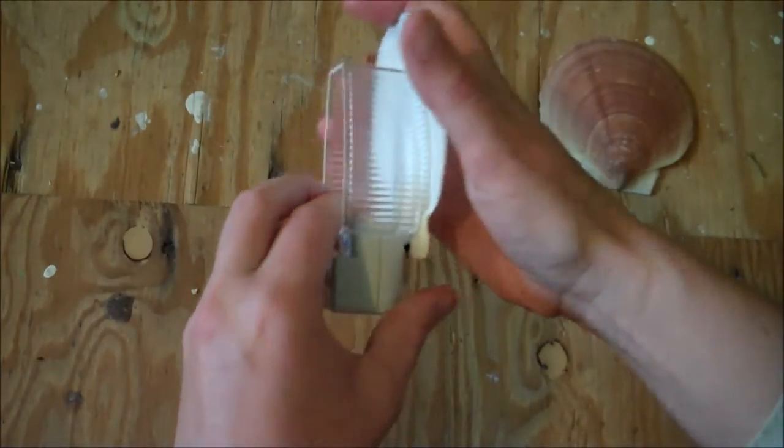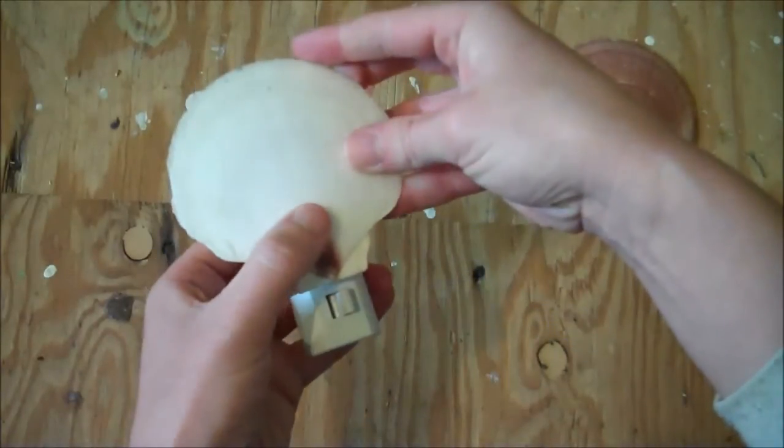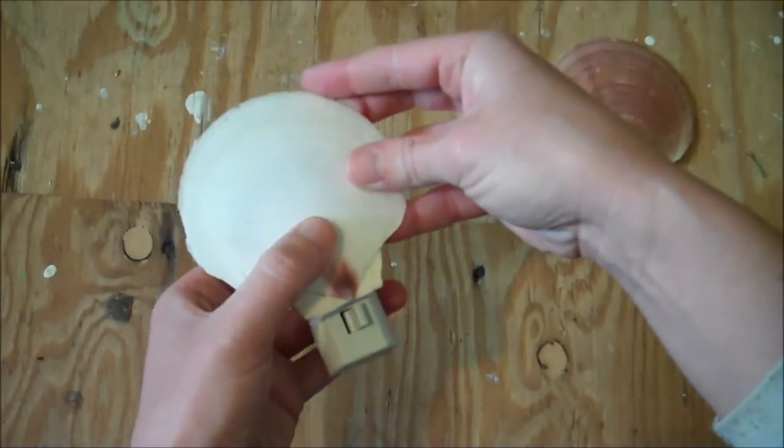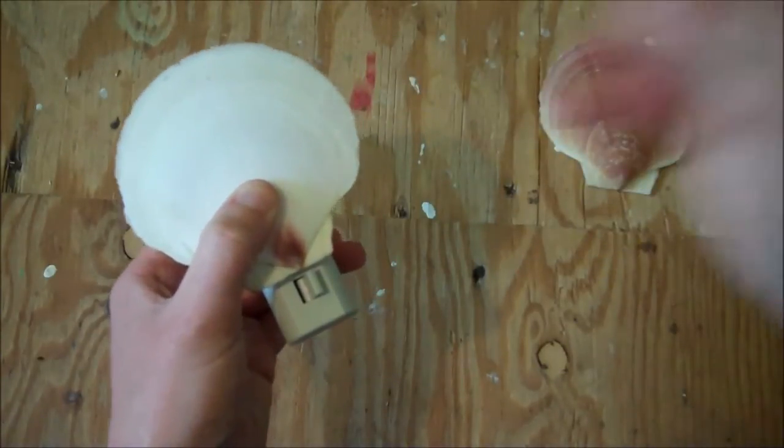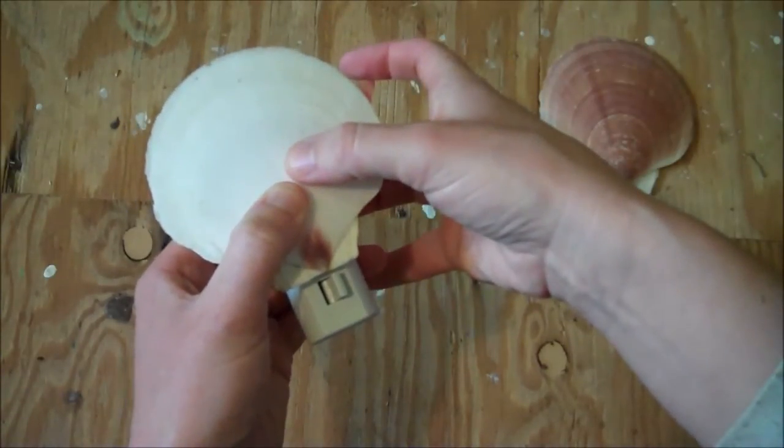So then just glue that right onto the plastic shield of the nightlight. Just readjust it while the glue is still warm. And then just hold it in place until the glue is cool.